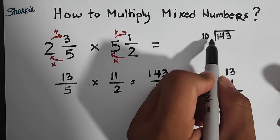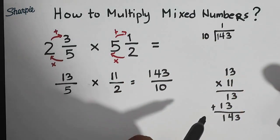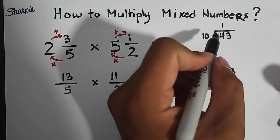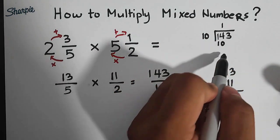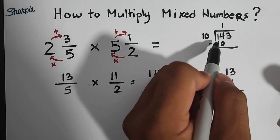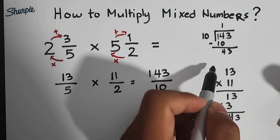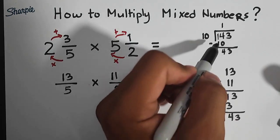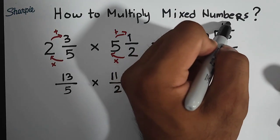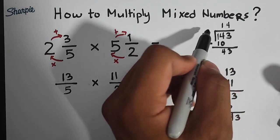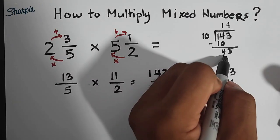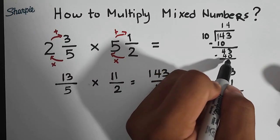So 143 divided by 10. 14 divided by 10 is 1. 1 times 10 is 10. Subtract the numbers, 14 minus 10 is 4. Then bring down 3. 43 divided by 10, that is equivalent to 4. 4 times 10, that is 40. Subtract the numbers, the answer is 3.